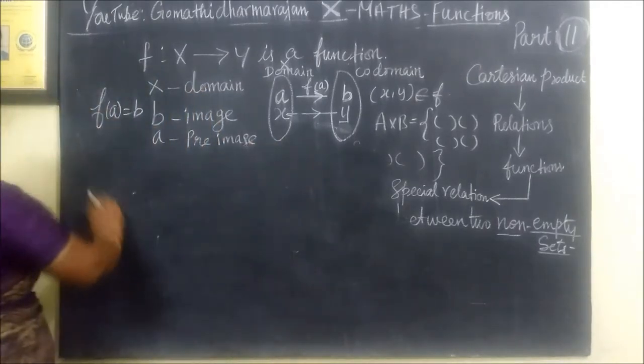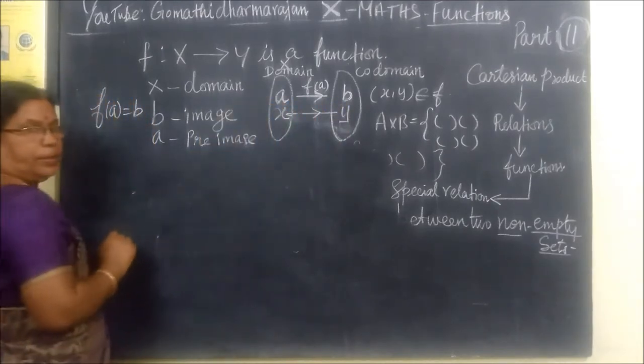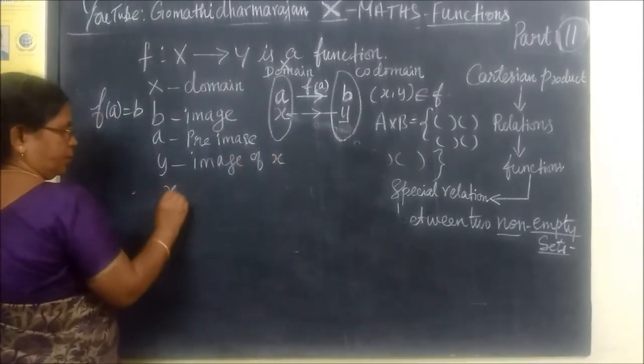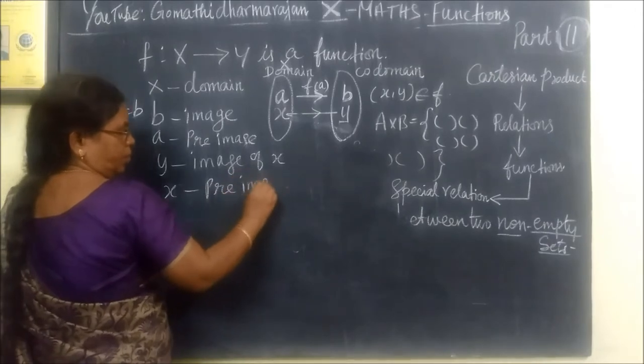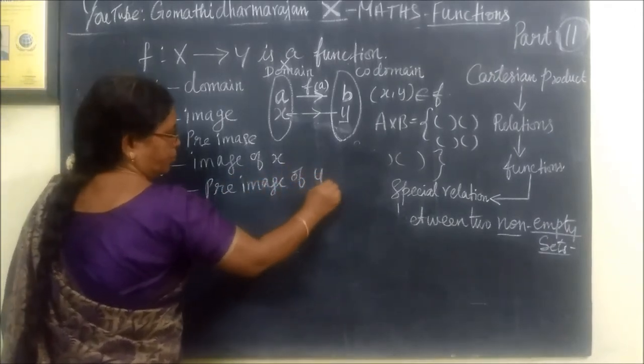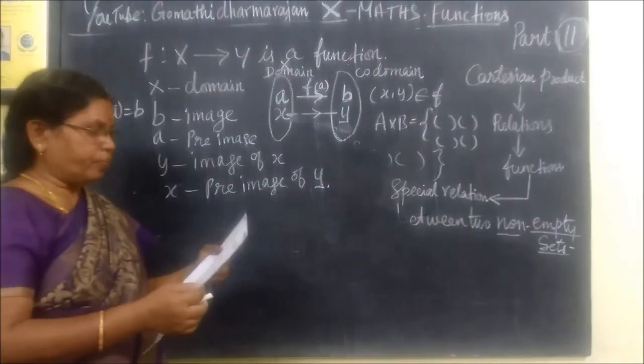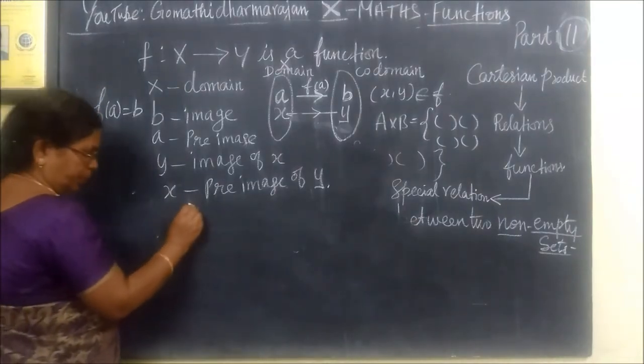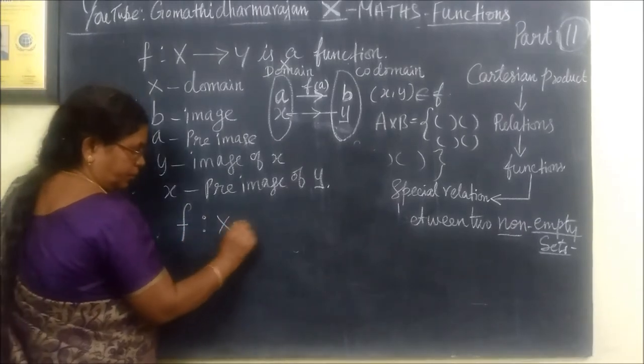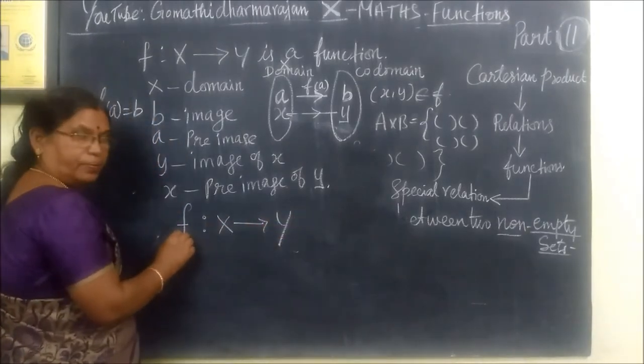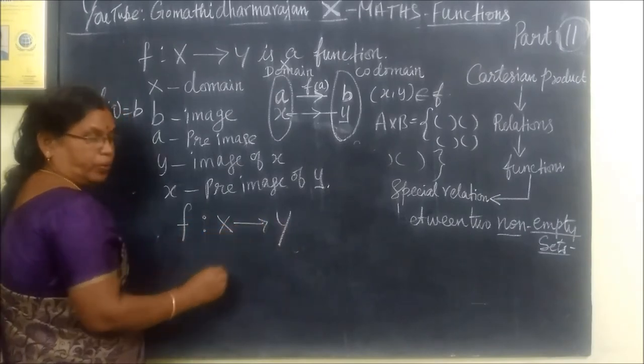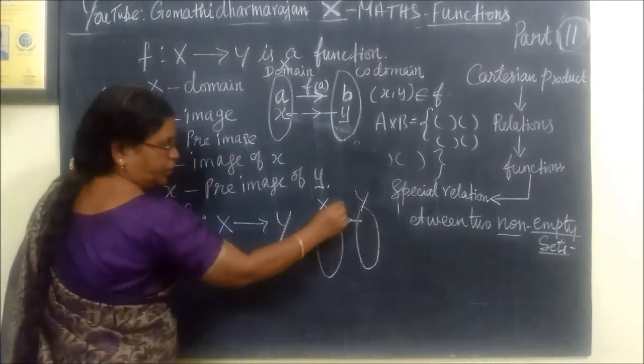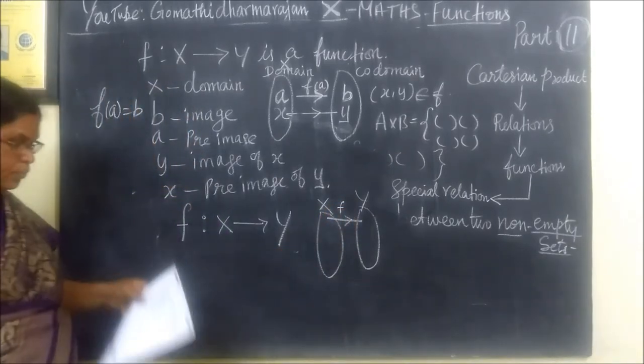Now, B is the image. A is the preimage. That means Y is the image, image of X. X is the preimage of Y. The function F maps X to Y.